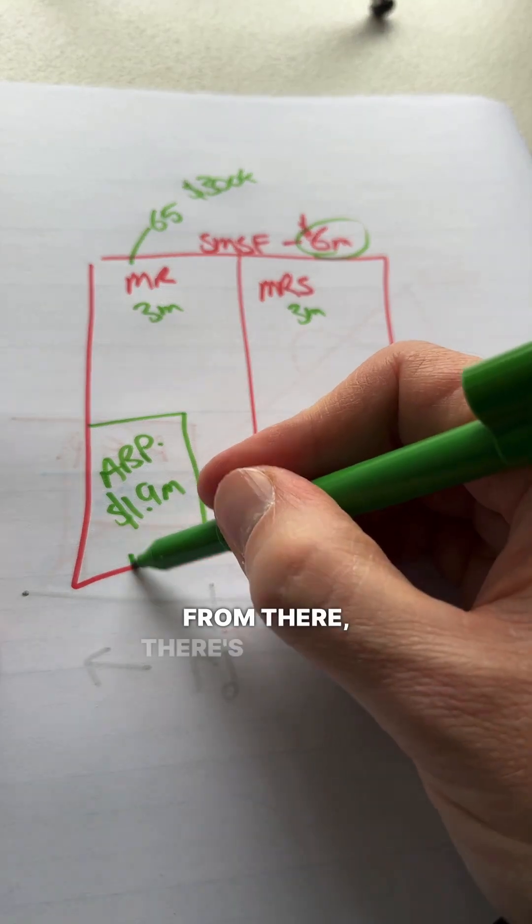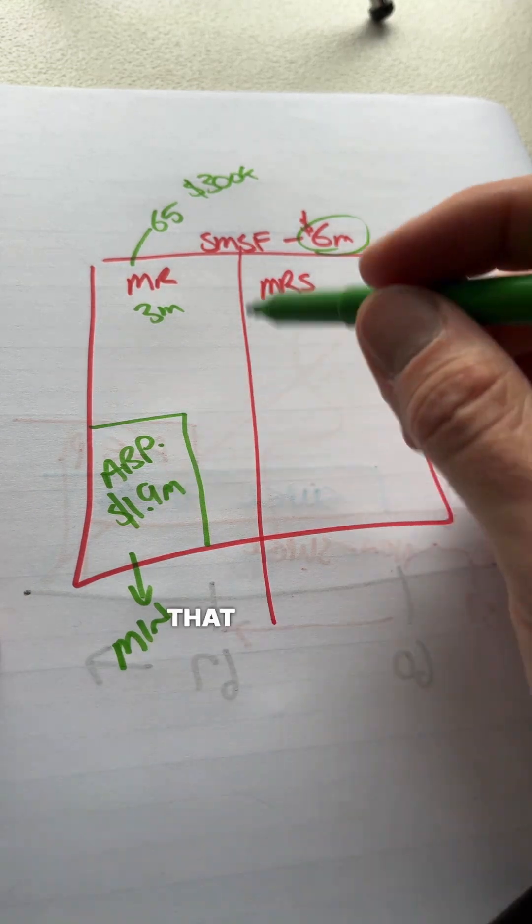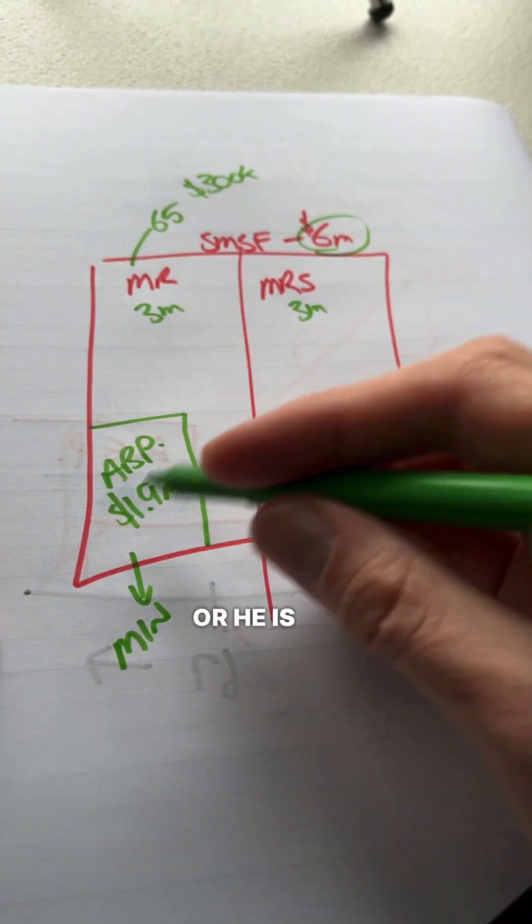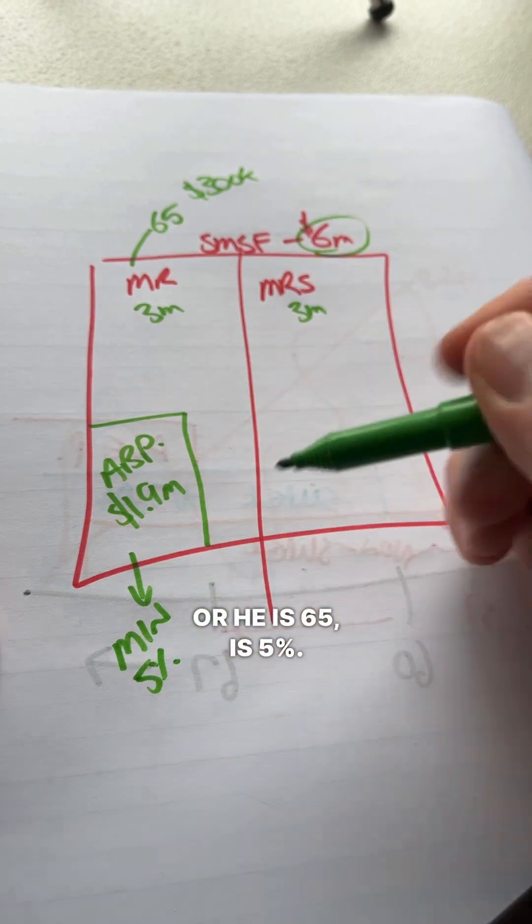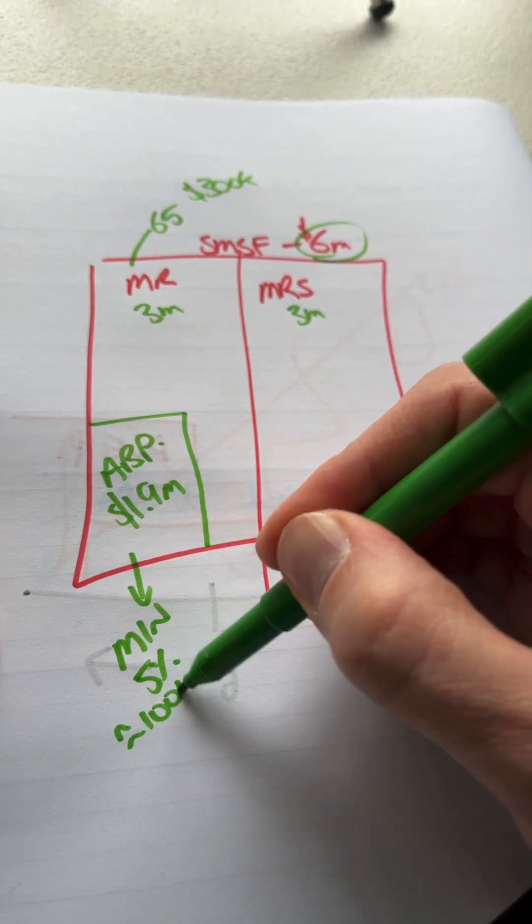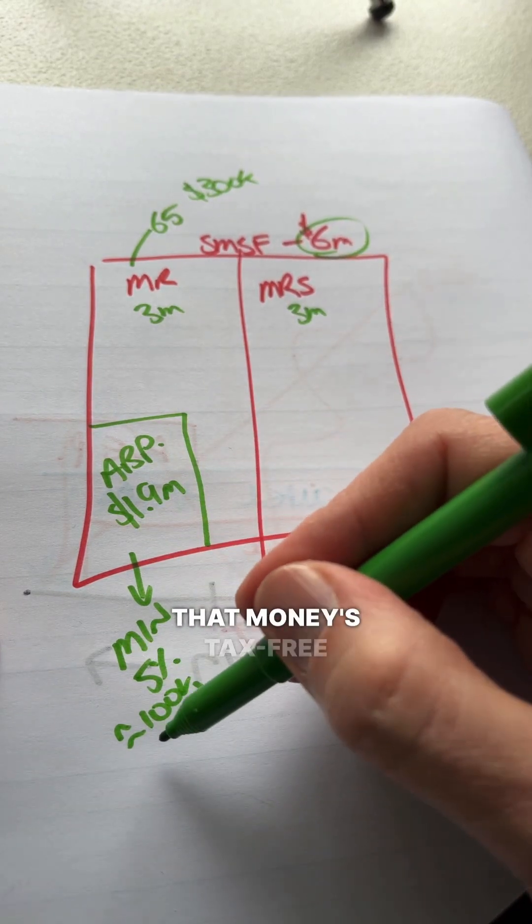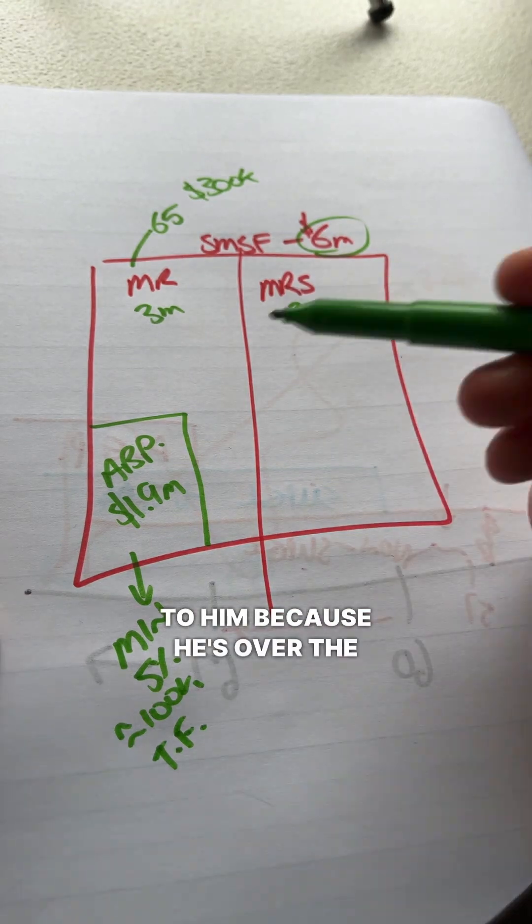From there, there's a minimum amount of money that he has to take out each year to satisfy the pension requirements. That minimum, because he's over the age of 65, or he is 65, is 5%. So there's roughly about $100,000 has to come out of this pension fund in pension payments. That money's tax-free to him because he's over the age of 60, but about $100,000 has to come out.